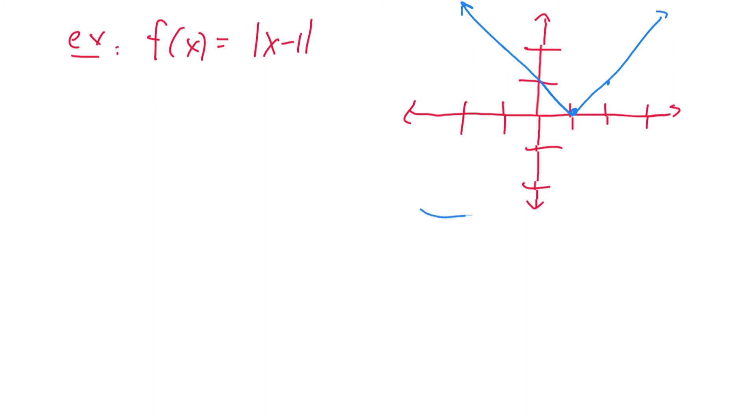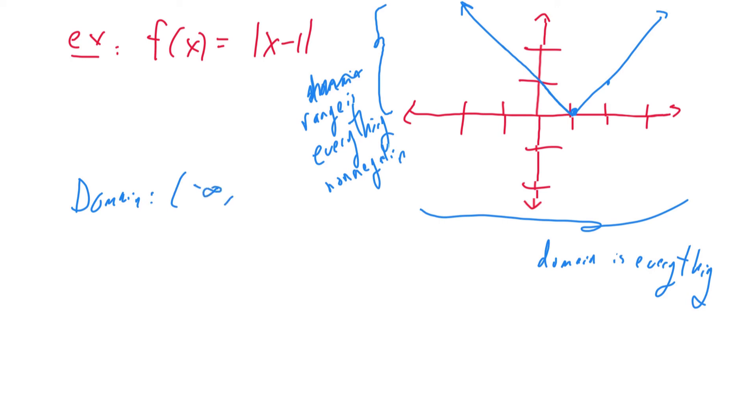So what can I infer? I have no domain restrictions. But I do have a big range restriction. I can't get anything negative from the absolute value. So I'll say that the range is everything non-negative. So to write this out, domain minus infinity to infinity, range zero to infinity and will include zero.